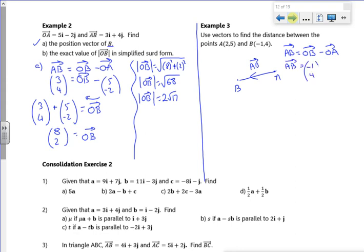So AB is OB which would be (-1, 4) minus (2, 5). So minus 1 minus 2 is minus 3. 4 minus 5 is minus 1. So that's AB.